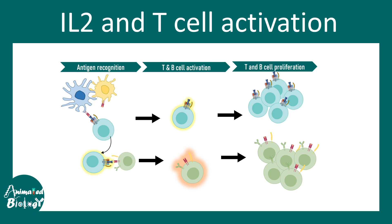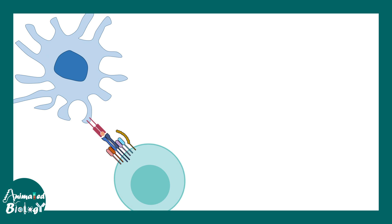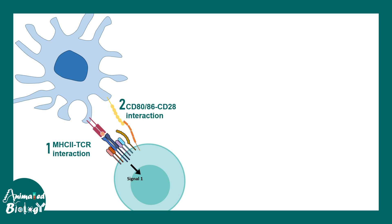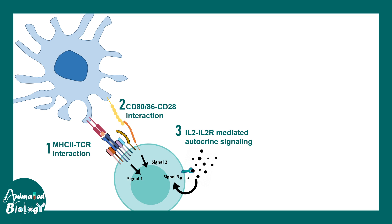Both activated T cells and B cells undergo cell cycle re-entry and proliferate massively. Eventually B cells form plasma cells and T cells differentiate into subtypes. The molecular process involves the dendritic cell and T cell interaction: signal one is MHC2 on the dendritic cell interacting with the T cell receptor; signal two comes from CD80/CD86 interacting with CD28 on the T cell; and signal three is interleukin-2 and interleukin-2 receptor mediated autocrine signaling. All three signals are required for activation and cell cycle re-entry.